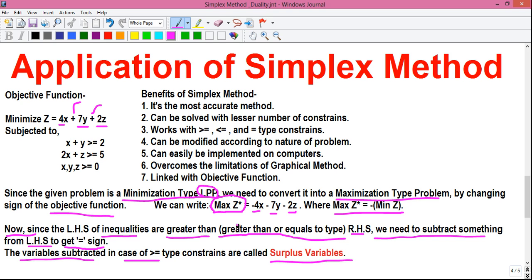the variables subtracted in case of greater than or equal to type constraints are called the surplus variables. And in case of less than or equal to type constraints, we basically add something to the left hand side to get the equals to sign. And those variables are called slack variables in that case.